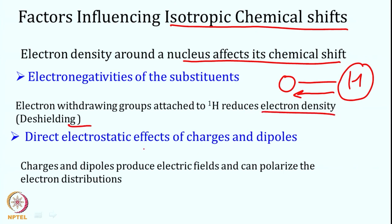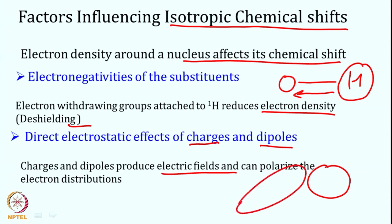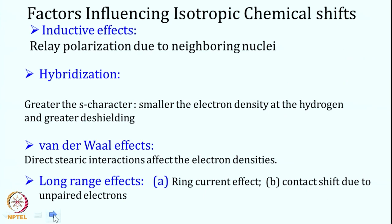Another factor is the direct electrostatic effect of charges and dipoles in the sample. A charge or dipole produces an electric field that polarizes the electron distribution around a nucleus — for instance, distorting a spherical electron density — changing the chemical shift. A third factor is the inductive effect: relay polarization to neighboring nuclei, where an electronegative group at a distance can induce polarization and affect the chemical shift.